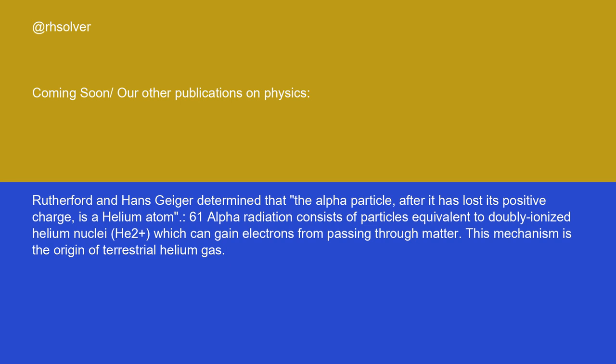Alpha radiation consists of particles equivalent to doubly ionized helium nuclei, He²⁺, which can gain electrons from passing through matter. This mechanism is the origin of terrestrial helium gas.